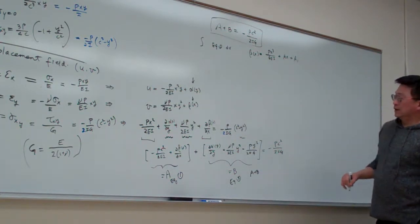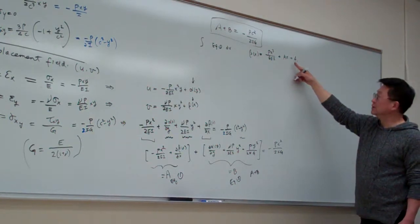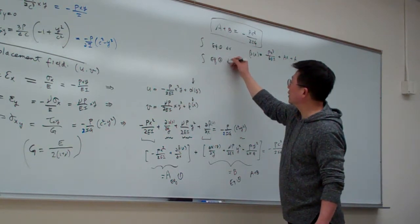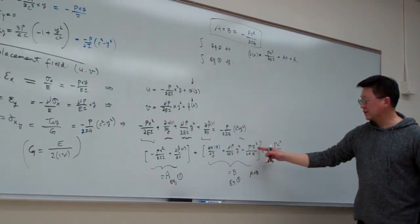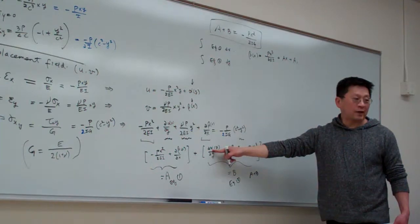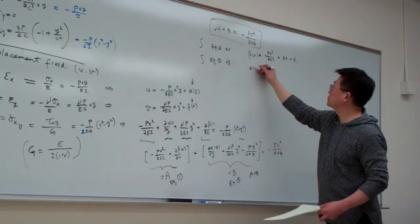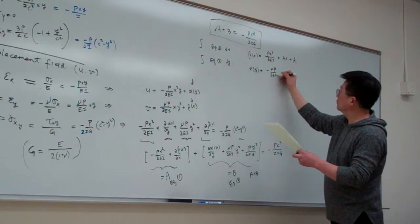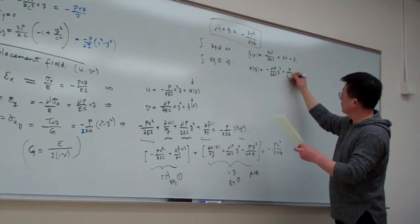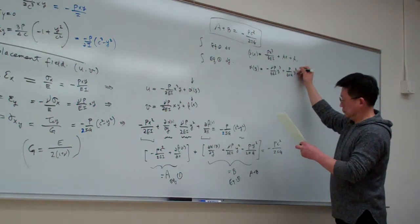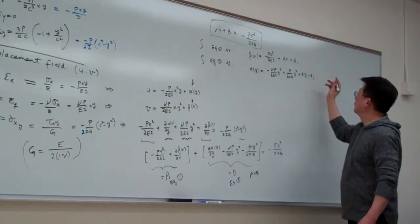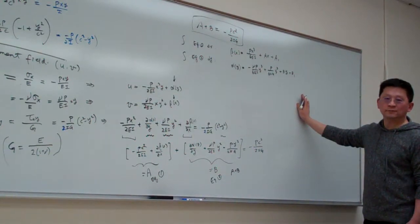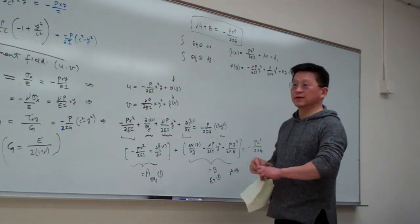So for equation one, let me call this equation one, and this equation two. For equation one, we do the integral over X. That means beta(X) equals P X cubed over 3 times 6EI plus AX plus A1. A1 is an additional integration constant. Similarly, we take the indefinite integral of the second equation over Y to get an explicit form for alpha.